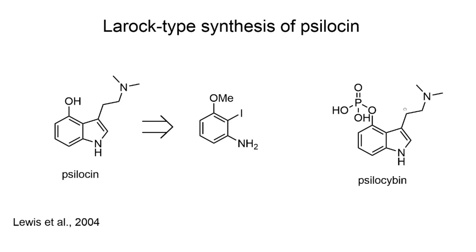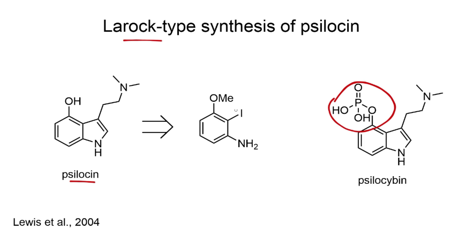Psilocybin is a naturally occurring tryptamine found in various species of mushrooms. In vivo, this phosphate ester is hydrolyzed to reveal the psychoactive tryptamine psilocin. Structurally, psilocin is a close relative of dimethyltryptamine with an extra hydroxy group. In 2004, Lewis and co-workers wanted to prepare psilocin as an analytical standard, and I'm going to show you the Larock-type synthesis carried out based on a substituted aniline starting material.